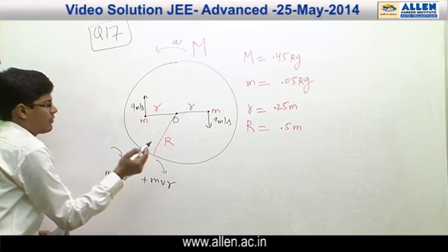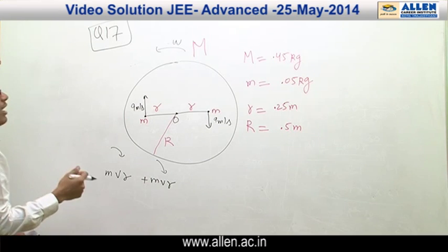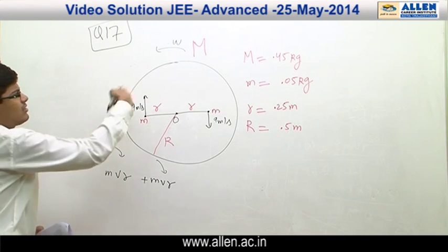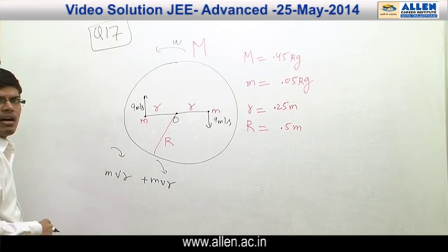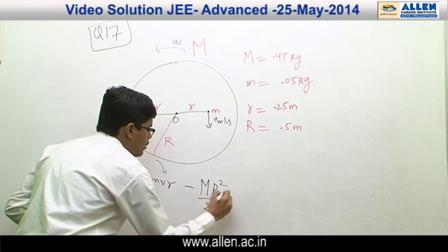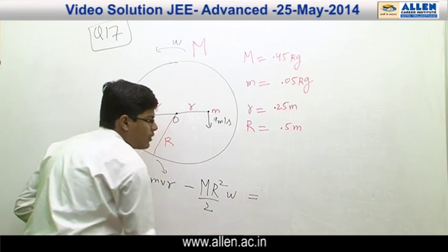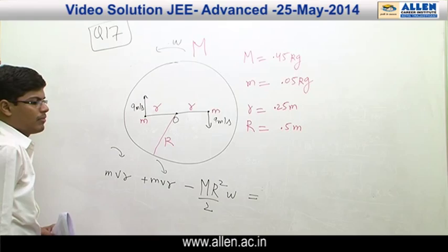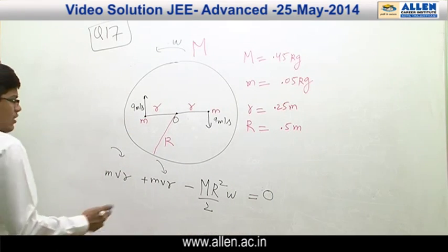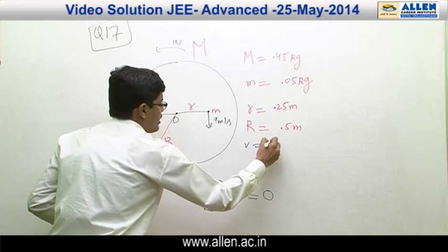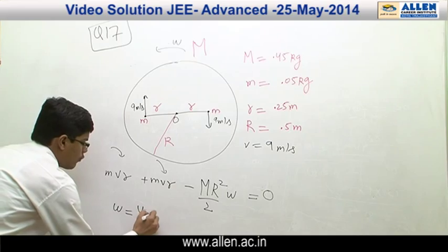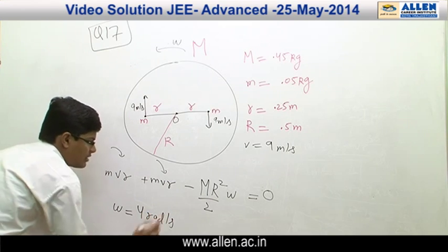Taking clockwise as positive, the angular momentum of the table is I·ω in the anti-clockwise sense, where the moment of inertia of the disk is M·R²/2. So we have: 2·m·V·r − (M·R²/2)·ω = 0 (initial angular momentum). Putting V = 9 m/s and the given values: